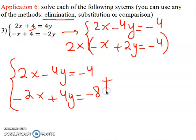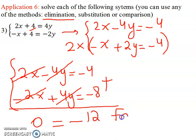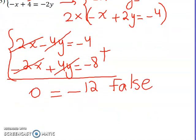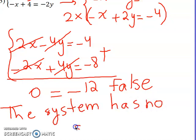Adding the two equations: two x and minus two x cancel, minus four y and plus four y cancel, leaving zero equal minus four minus eight, which is zero equal minus twelve. This is false — zero never equals minus twelve. Therefore the system has no solution; the straight lines are parallel and do not intersect.